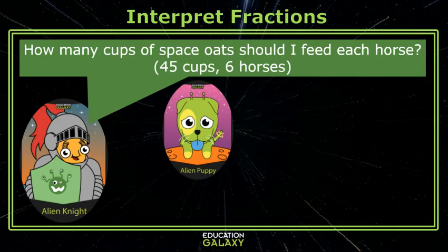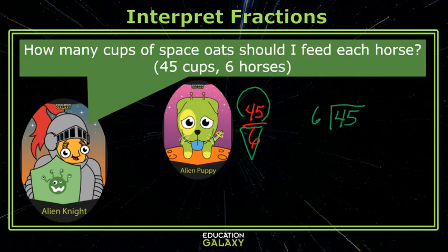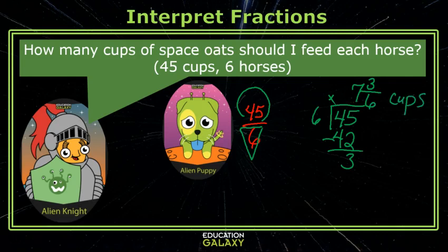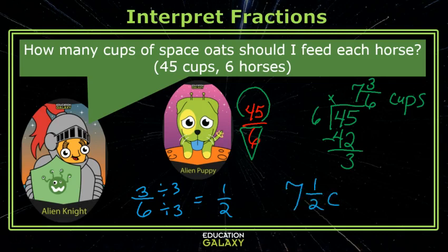Can you tell me exactly how much each one should get? Sure. It's 45 divided by six. I use my ice cream cone division to remember how to rewrite it — the ice cream goes in the freezer. So that would be seven. Seven times six is 42, and I'm going to write my remainder as a fraction: my remainder goes on top and the number I'm dividing by goes on bottom. So each one gets seven and three-sixths cups. However, we can take the fraction three-sixths and simplify it to get one-half. So I will give each one seven and a half cups of feed.